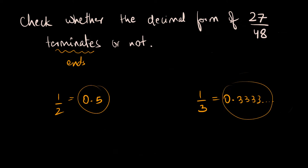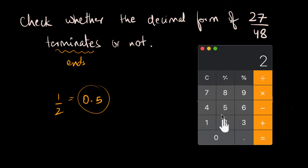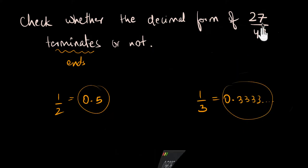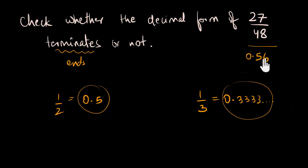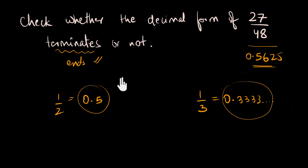If I open my calculator and punch in 27 by 48, I get 0.5625. So this fraction is actually 0.5625 and it clearly ends — the decimal form terminates. Now I know what you're thinking: in your exams, calculators are not allowed, so you're looking for a way to solve this without a calculator.